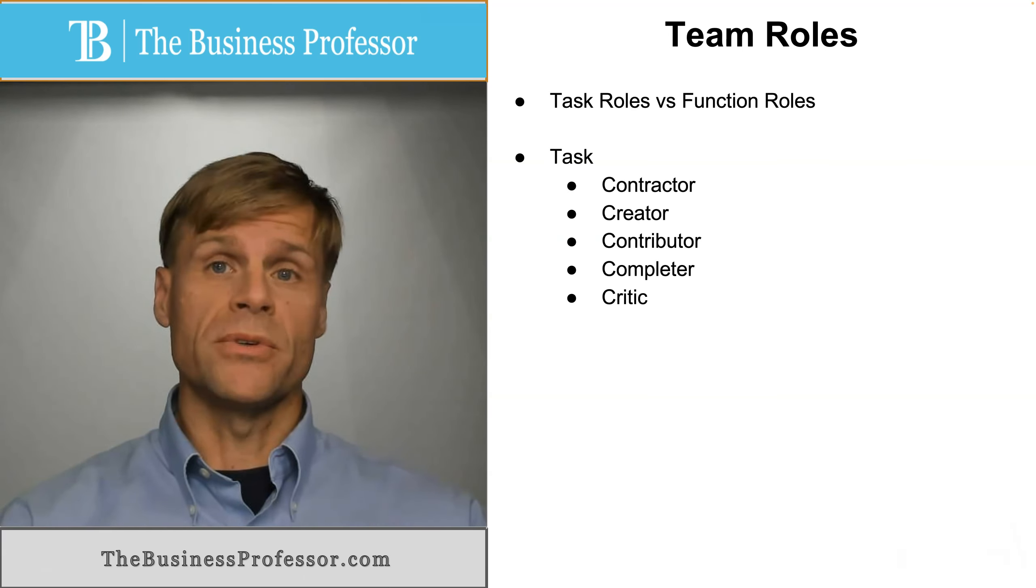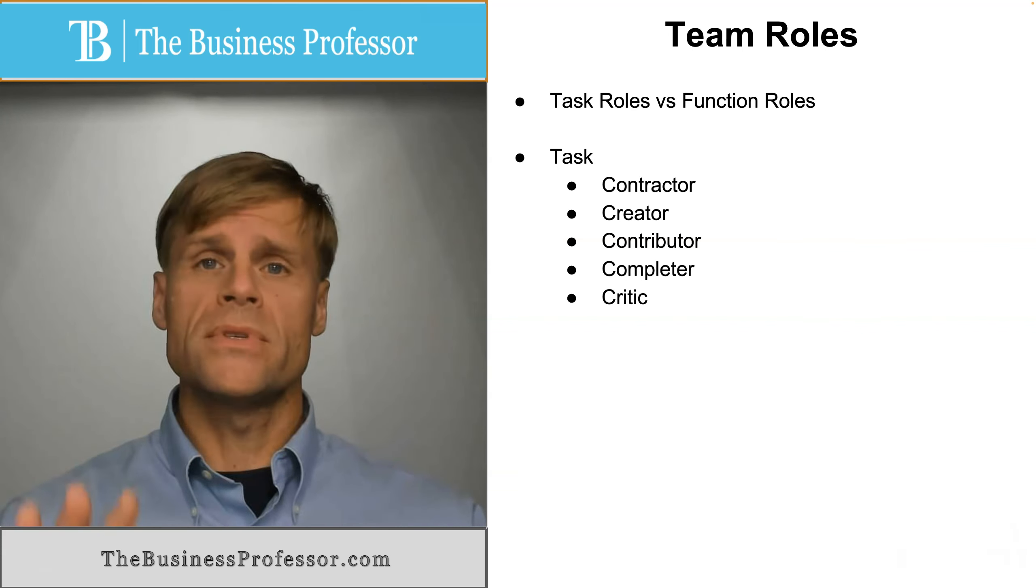A task role is generally made up of one of several types. A contractor, one who organizes the process for task completion. A creator, the person who identifies the tasks themselves that need to be completed in any series of tasks that need to come together for completion purposes.